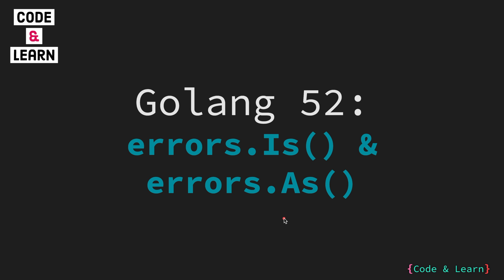Hello everyone. Welcome to tutorial 52 of our Golang course. In the last tutorial, we looked at sentinel errors and wrapping of errors. At this point, I should mention that if a sentinel error is wrapped in another error, you won't be able to use simple equal-to comparison to check if the sentinel error is in the error chain. This is where the two functions errors.Is and errors.As come into play.